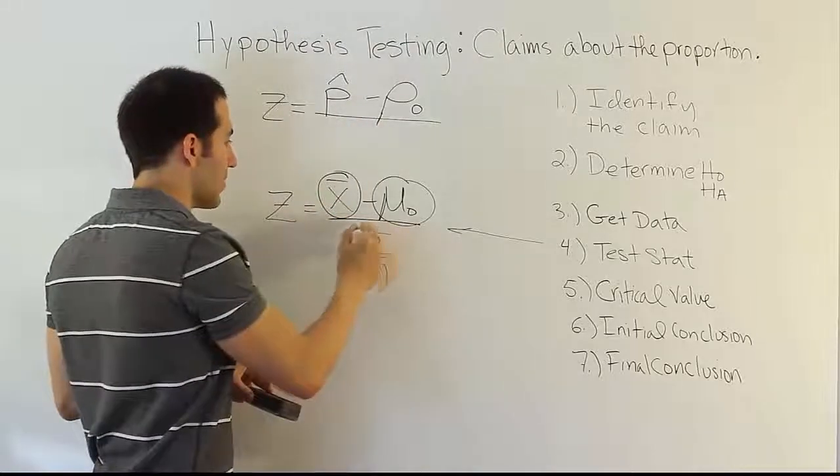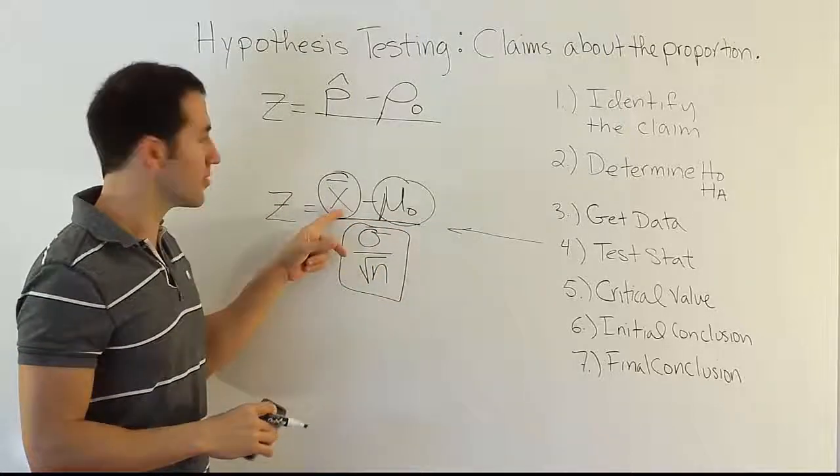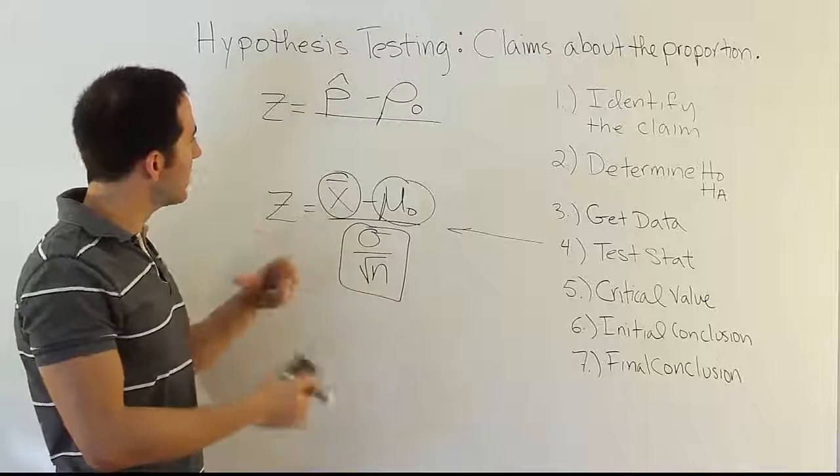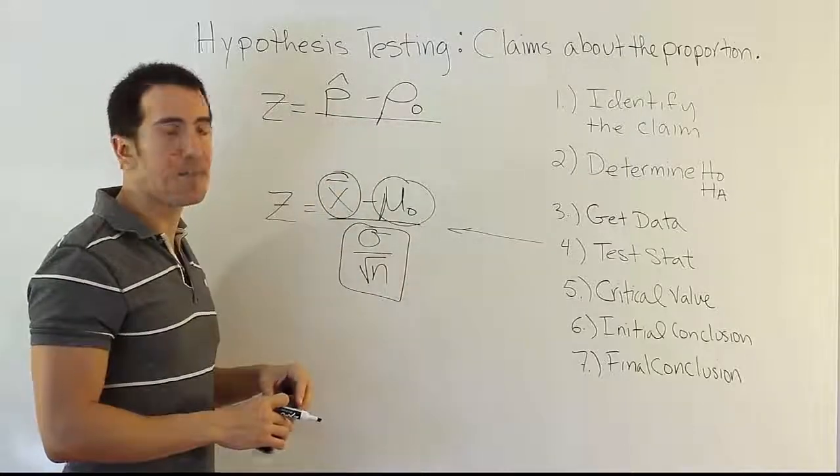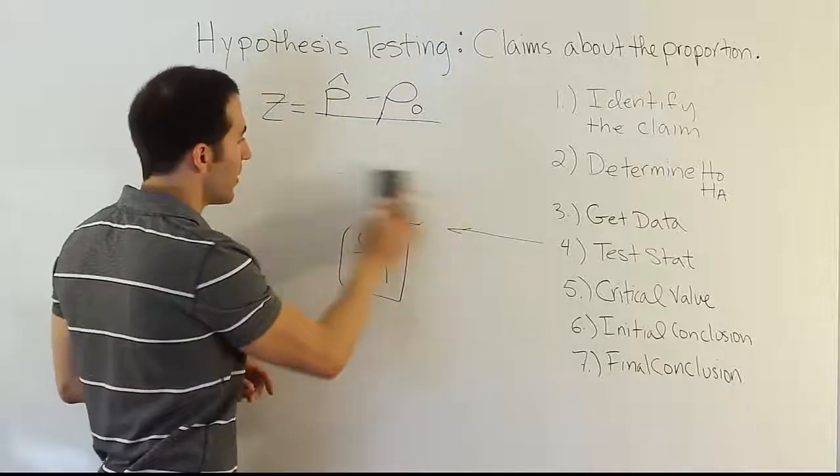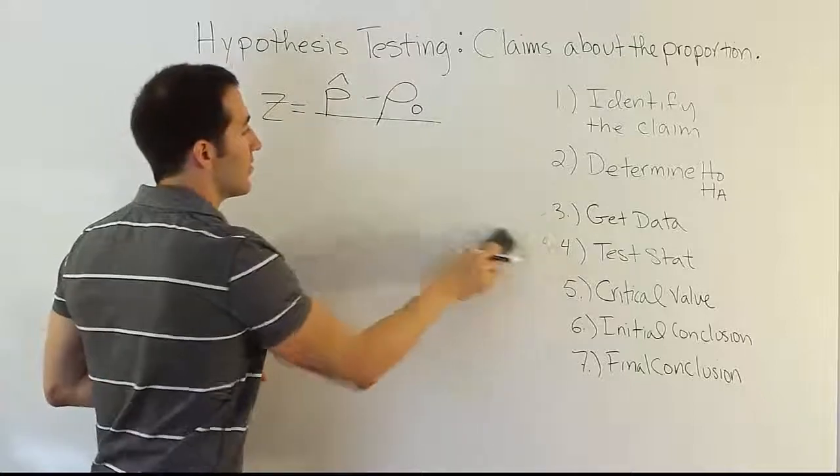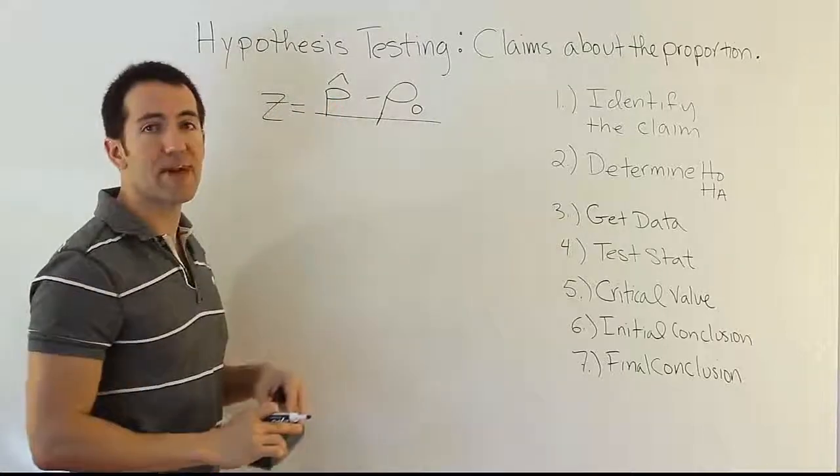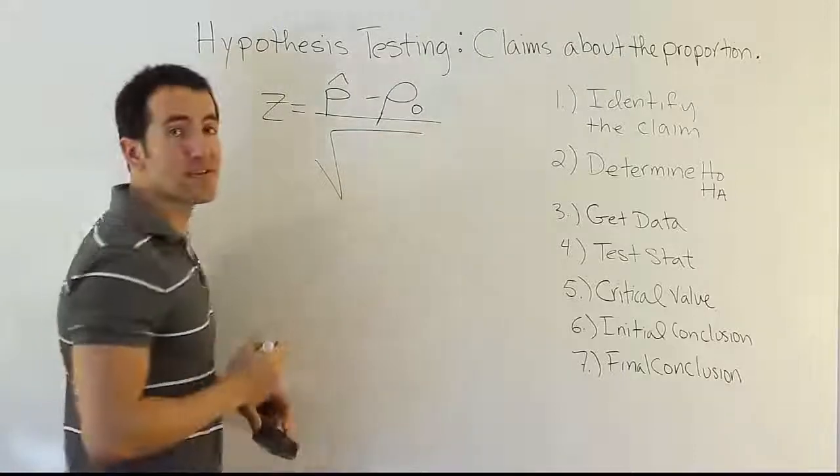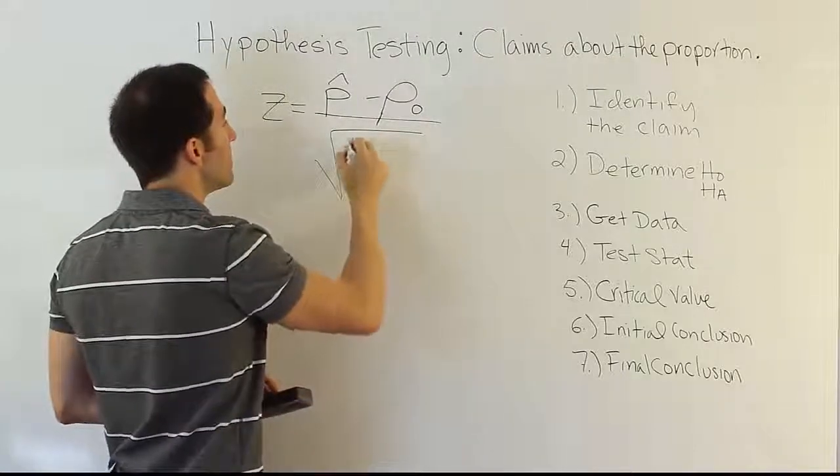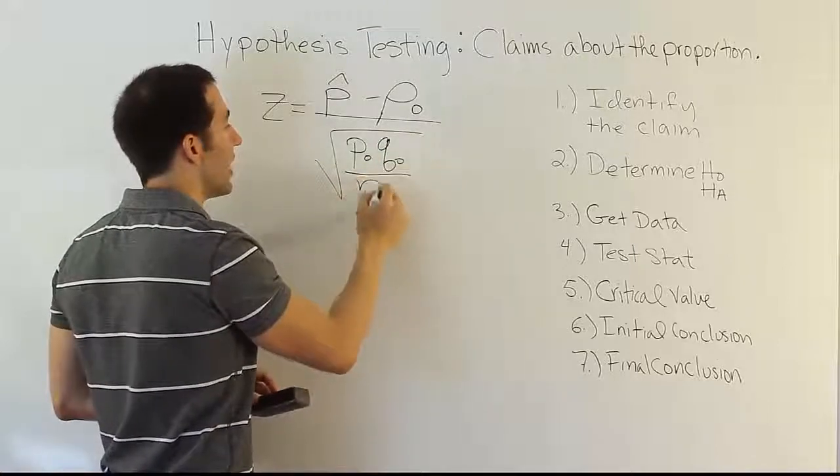Then we had this quantity at the bottom, this whole thing here. That was actually the standard error for x-bar. So if we're following that same analogous procedure, we should have the standard error for p-hat here at the bottom. And so that's what we'll do. But the question is, what is that standard error? How does p-hat vary, in other words? That's what we're looking for. How does the p-hat value vary?